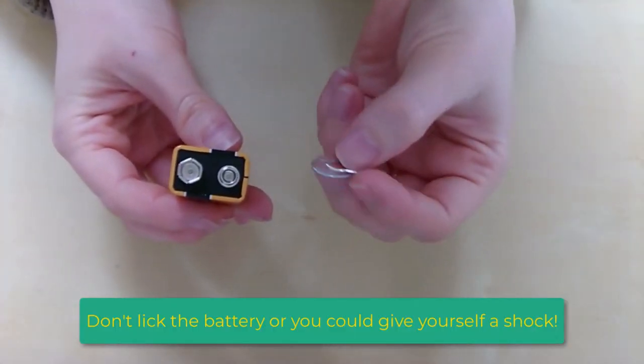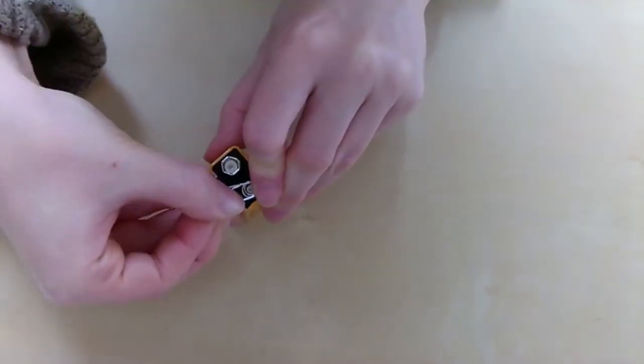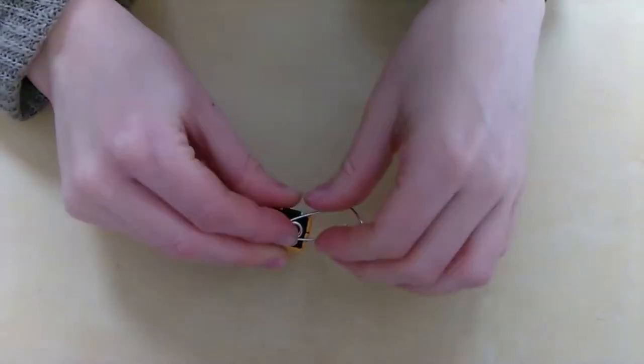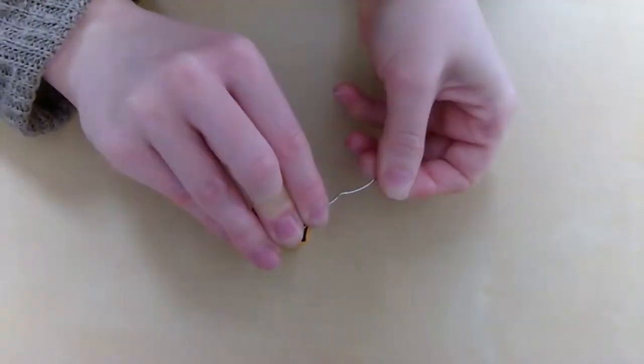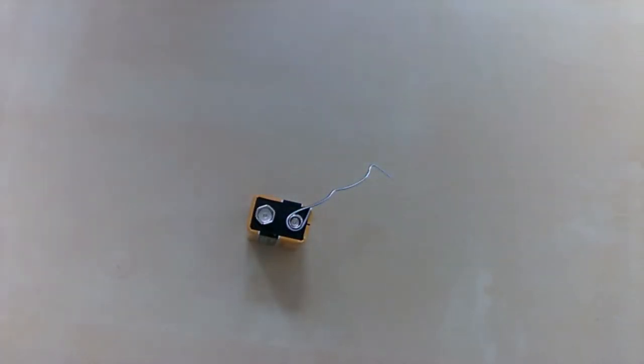Make sure you're using paperclips that don't have plastic coating for this. Now, all you need to do is use your fingers to bend the wire into shape until it's securely fastened. Do this to both paperclips.